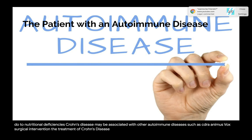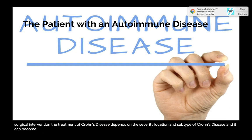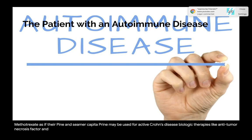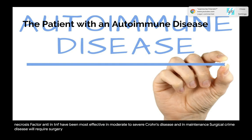Treatment of Crohn's disease depends on the severity, location, and subtype, and can be complex. Remission and maintenance of remission are the goals. Pharmacological therapies include methotrexate, azathioprine, and 6-mercaptopurine for active Crohn's. Biologic therapies like anti-tumor necrosis factor (anti-TNF) have been most effective in moderate to severe Crohn's disease and for maintenance. Approximately 80% of those with long-term Crohn's disease will require surgery, and many may require multiple surgeries over their lifetime.